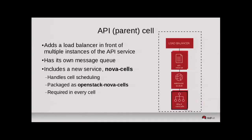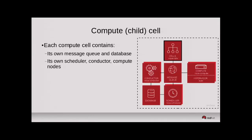Going down to the compute cell, there's a Nova Cells instance within it, and the rest of the architecture is very similar to a default deployment. The stress on the database and message queue is relieved because each cell has its own message queue and database. We split out the problem space and reduce the stress on those components, allowing us to scale to a wider deployment.